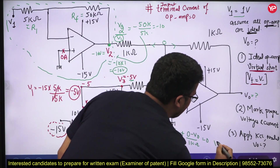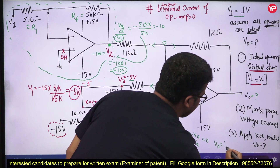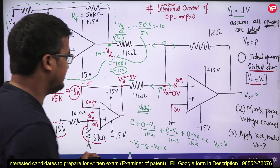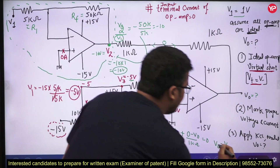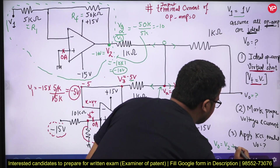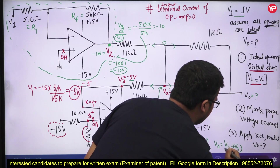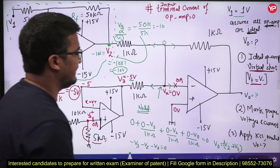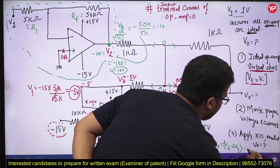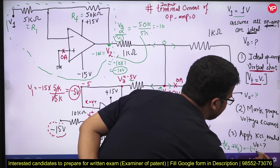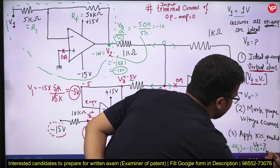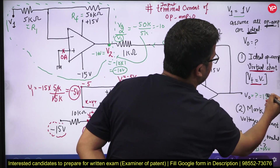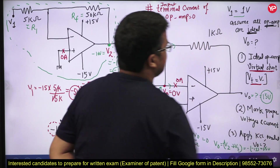So Vout is equal to minus (V2 plus V3). Substituting the values, Vout equals minus (minus 10 plus minus 5), which is minus of minus 15. So the answer is 15 volt. You are getting the answer 15 volt. That is your answer for this question.